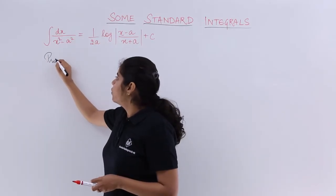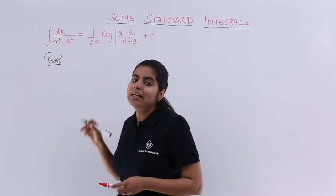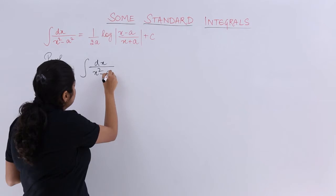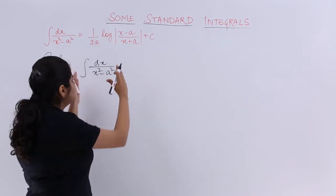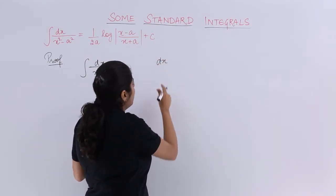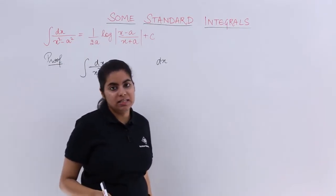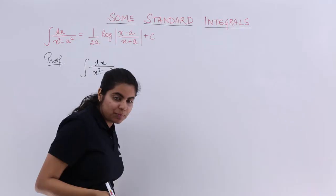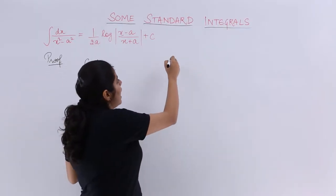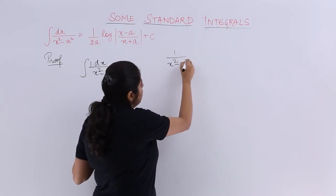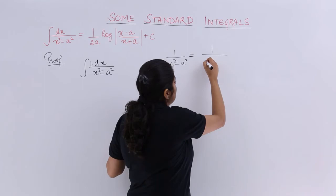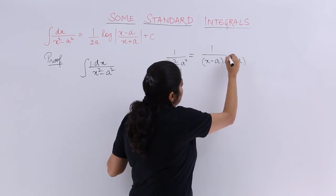The proof goes as follows. I know I have to evaluate the integral of this thing, which is nothing but dx upon x square minus a square. Now, leave the thing that we have integration. Just think as it is. Think that you have something called 1 upon x square minus a square. Had my function only been 1 upon x square minus a square, what would I have expanded it as?